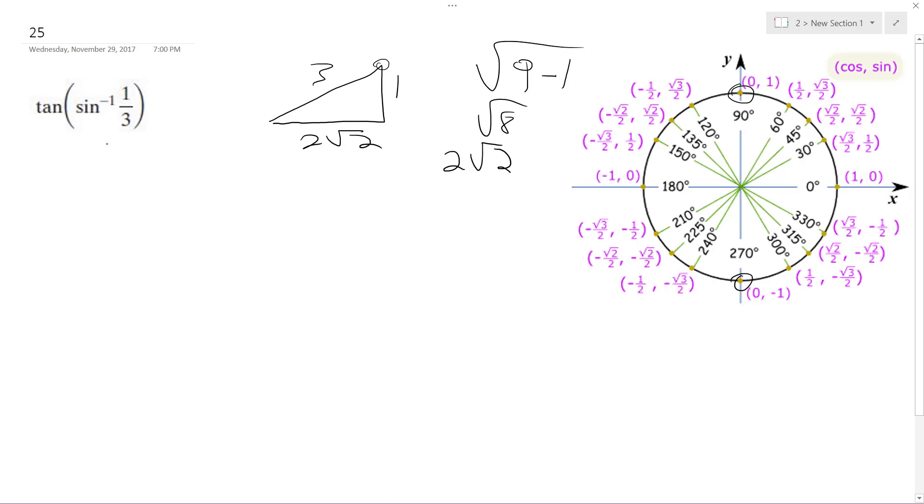So tangent is y over x, not y over r. So in this case, it's going to be one over two root two.